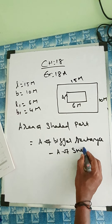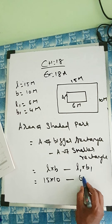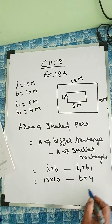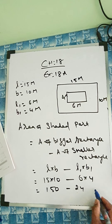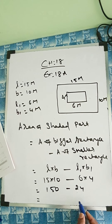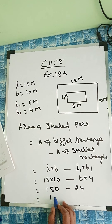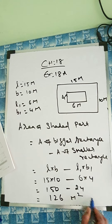Using the rectangle area formula L into B, we calculate: 15 into 10 minus 6 into 4, which gives 150 minus 24 equals 126 meter squared.